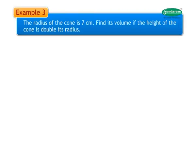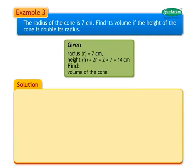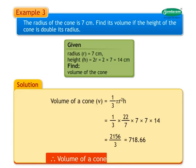Example 3: The radius of the cone is 7 cm. Find its volume if the height of the cone is double its radius. Given: r = 7 cm, h = 2r = 14 cm. Solution: Volume = 1/3 × π × r² × h = 1/3 × 22/7 × 7 × 7 × 14 = 2156/3 ≈ 718.66 cubic centimeters.